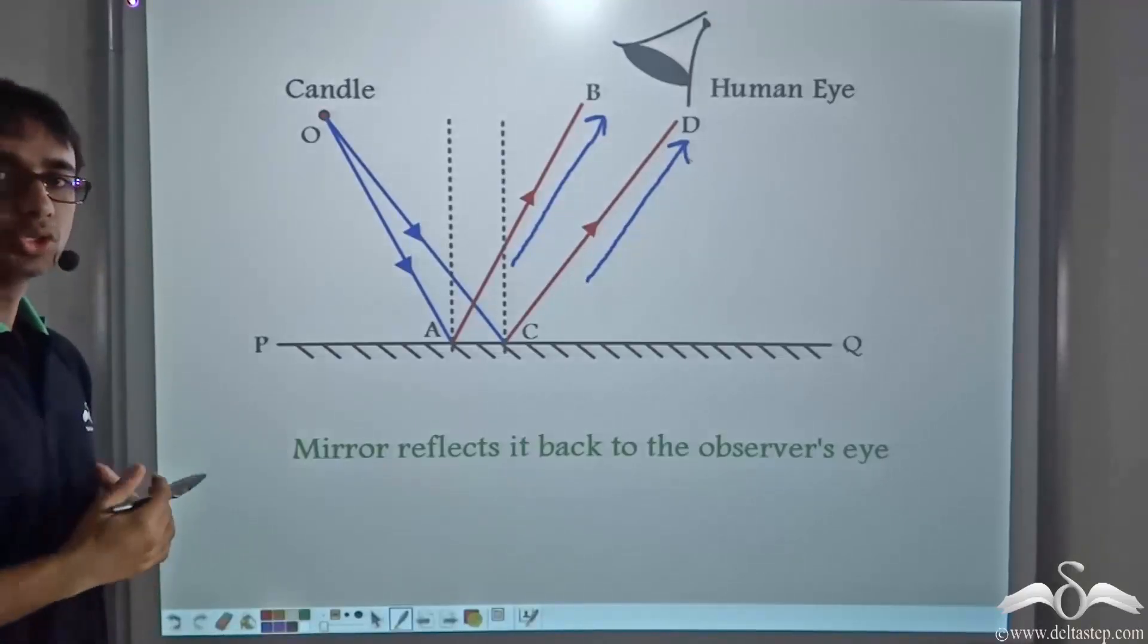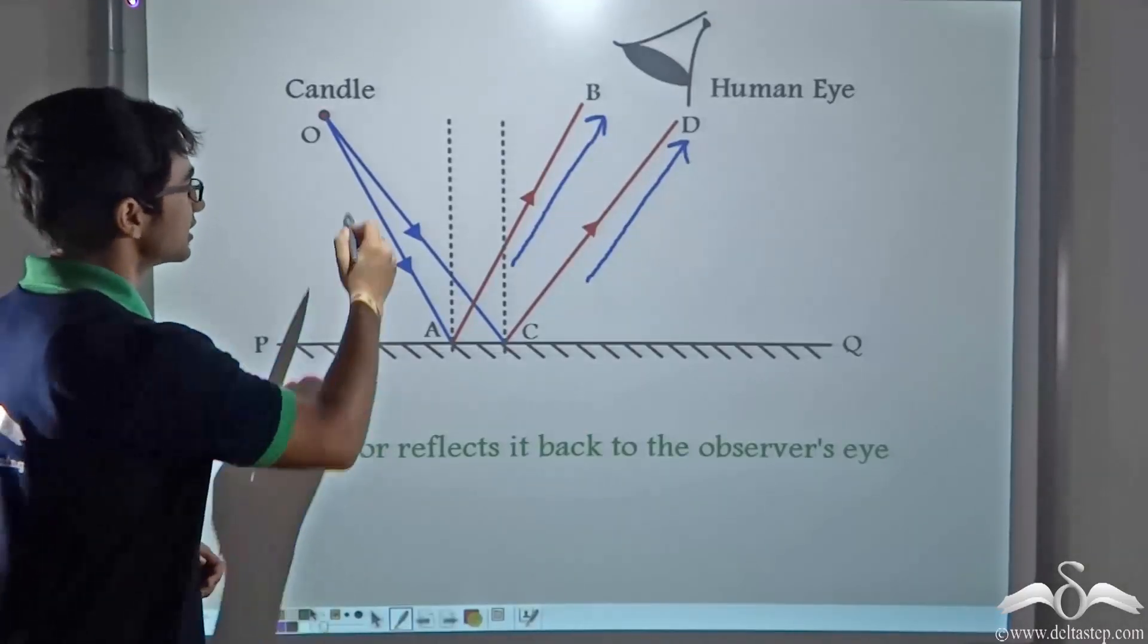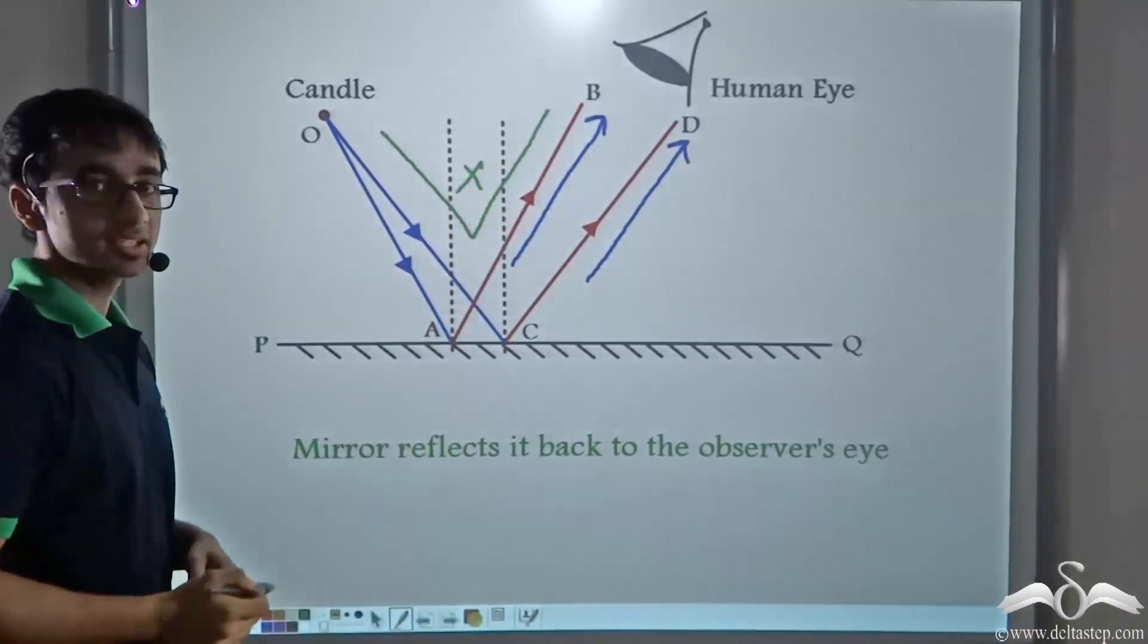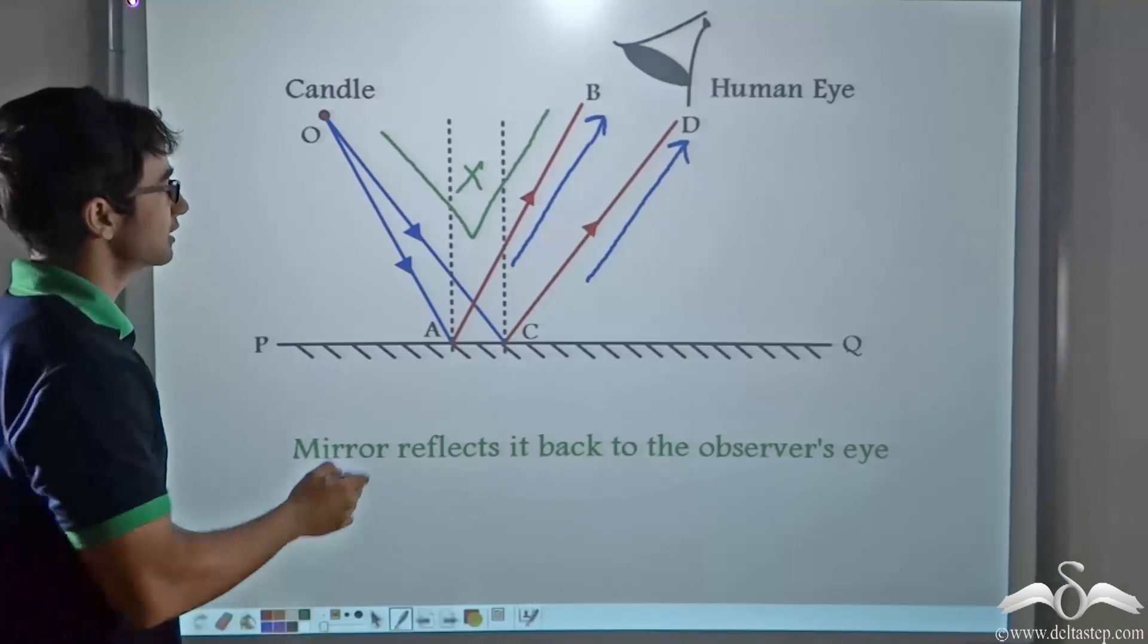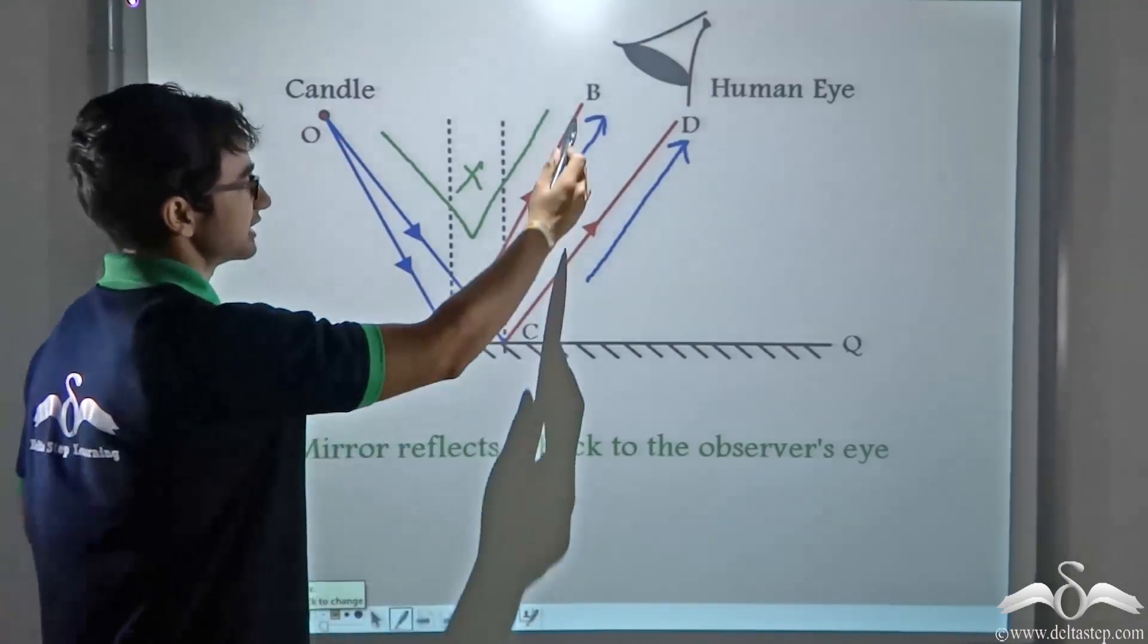Now do you think that the human eye is able to trace this V path? It is not. The human eye cannot trace the V path that the incident ray and the reflected ray is taking.